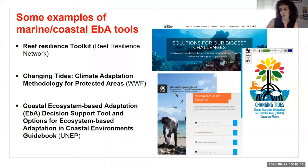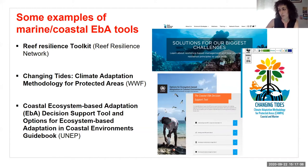To give examples of marine and coastal EBA tools in the navigator: the Reef Resilience Toolkit, developed by the Reef Resilience Network, is an online platform with resources to help project managers address climate change impacts on coral reefs. The Changing Tides Climate Adaptation Methodology for Protected Areas, developed by WWF, describes an approach for climate adaptation measures in coastal and marine protected areas. Another example is the Guide to Coastal EBA Options and Decision Support Tool, developed by UNEP, supporting selection, design, implementation, and evaluation of coastal EBA options.